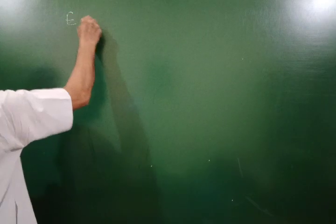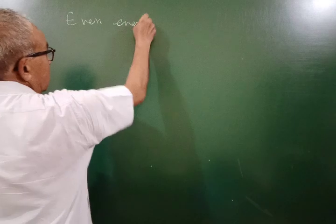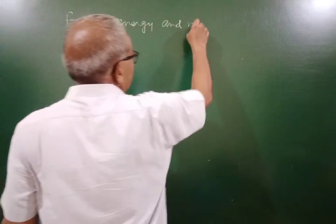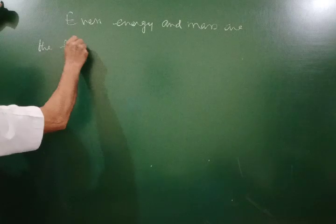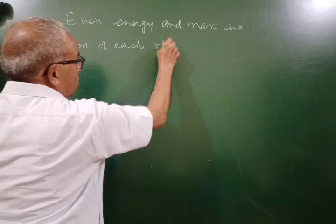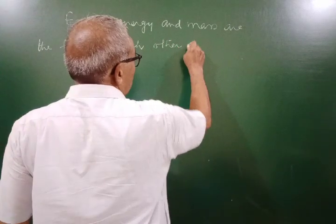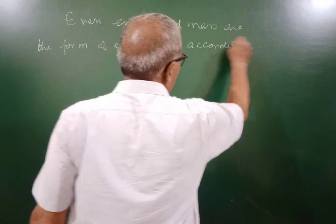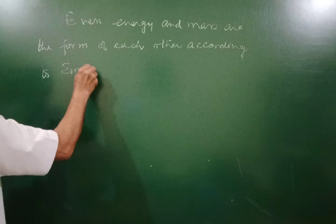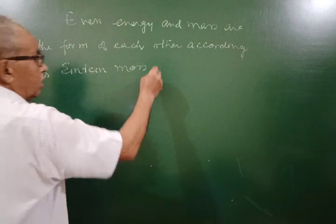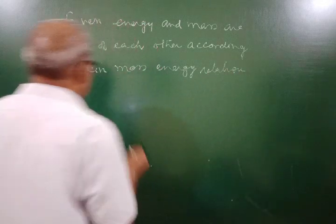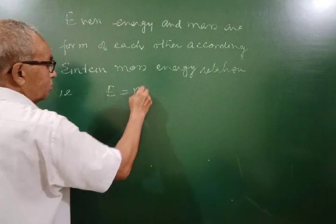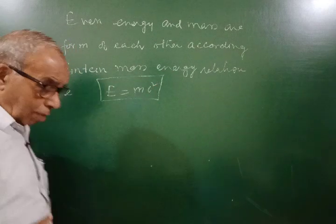According to equation given by Einstein. Even energy and mass are the form of each other. According to mass energy relation, that is E equals mc square. And c is the speed of light.